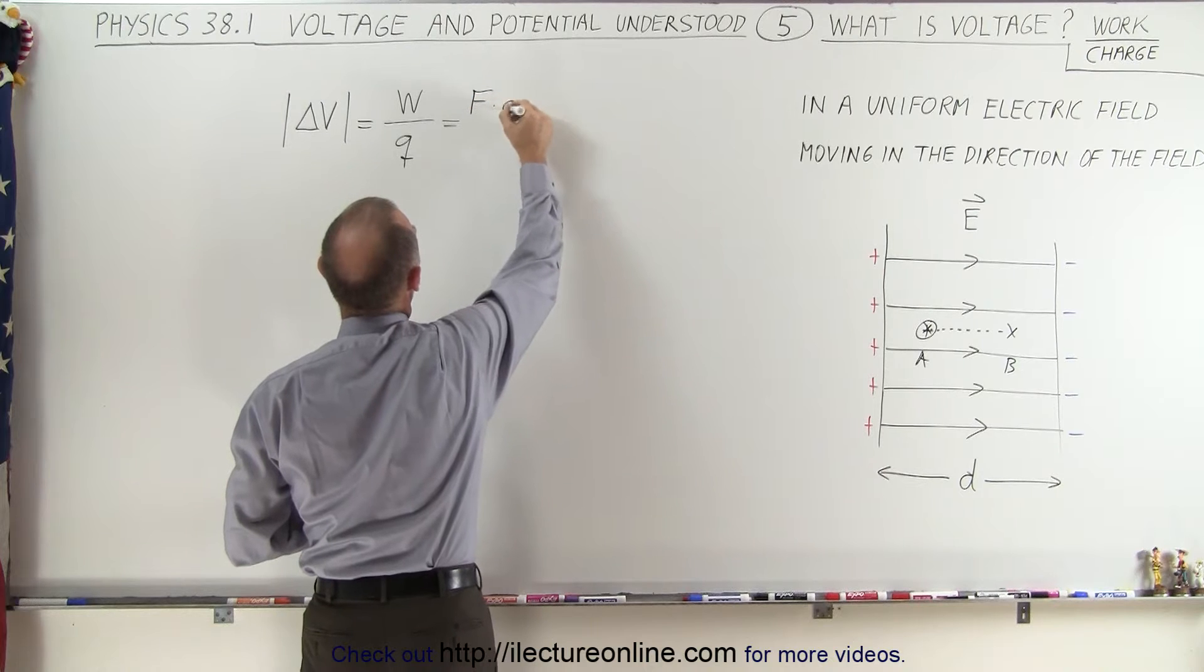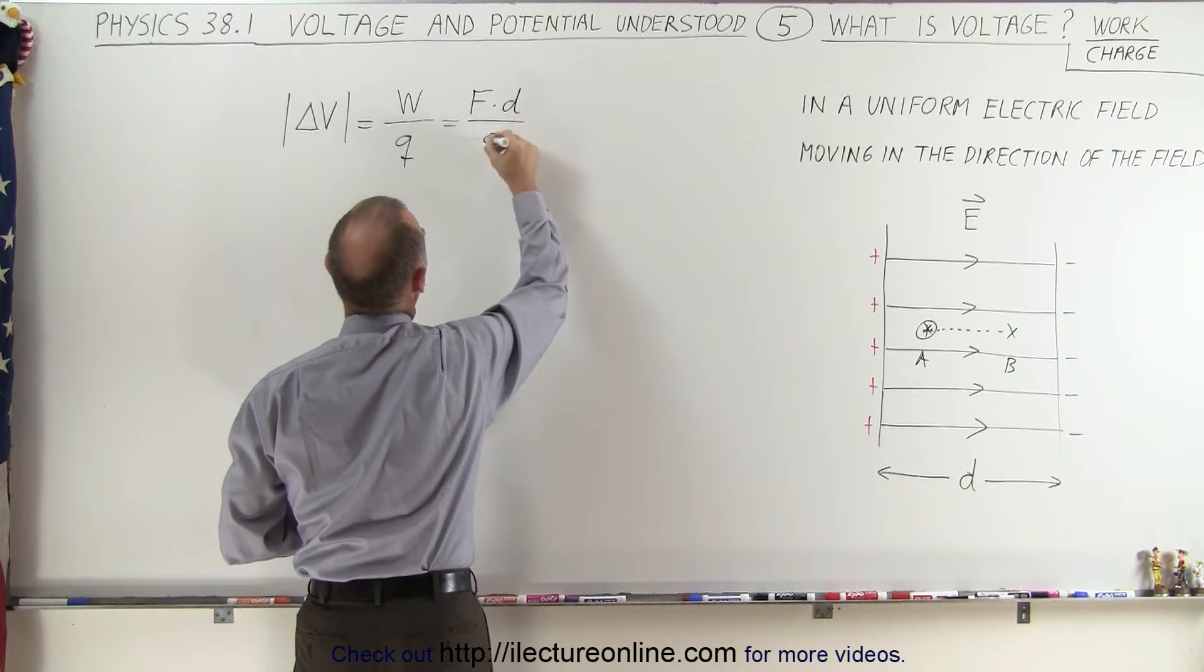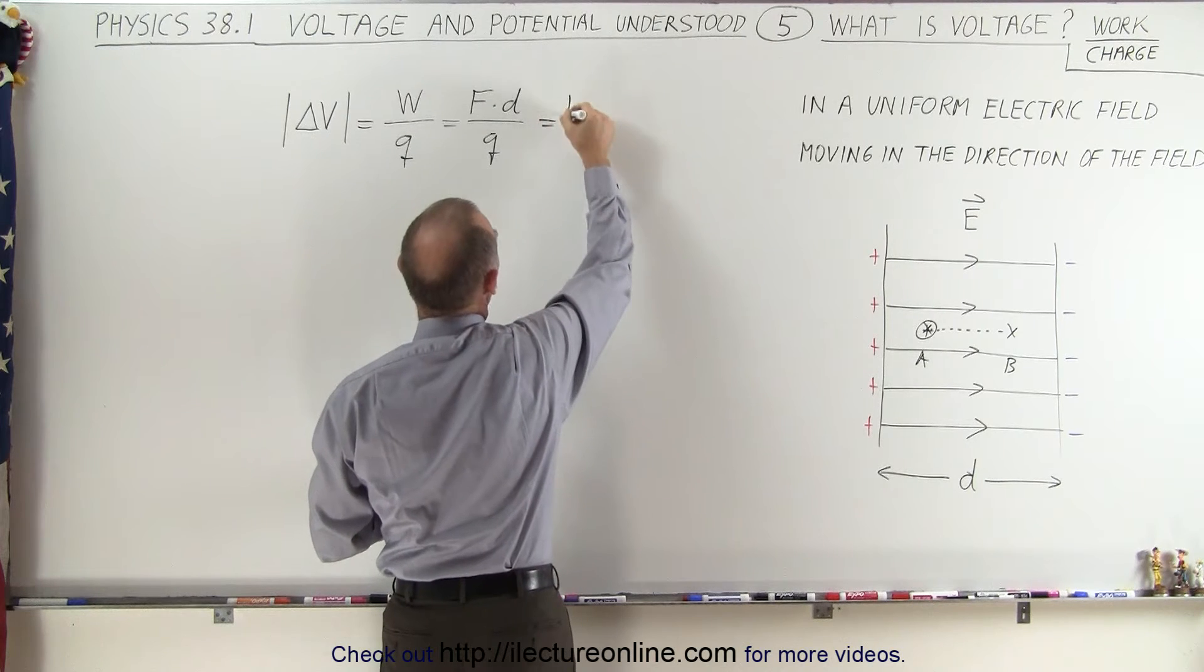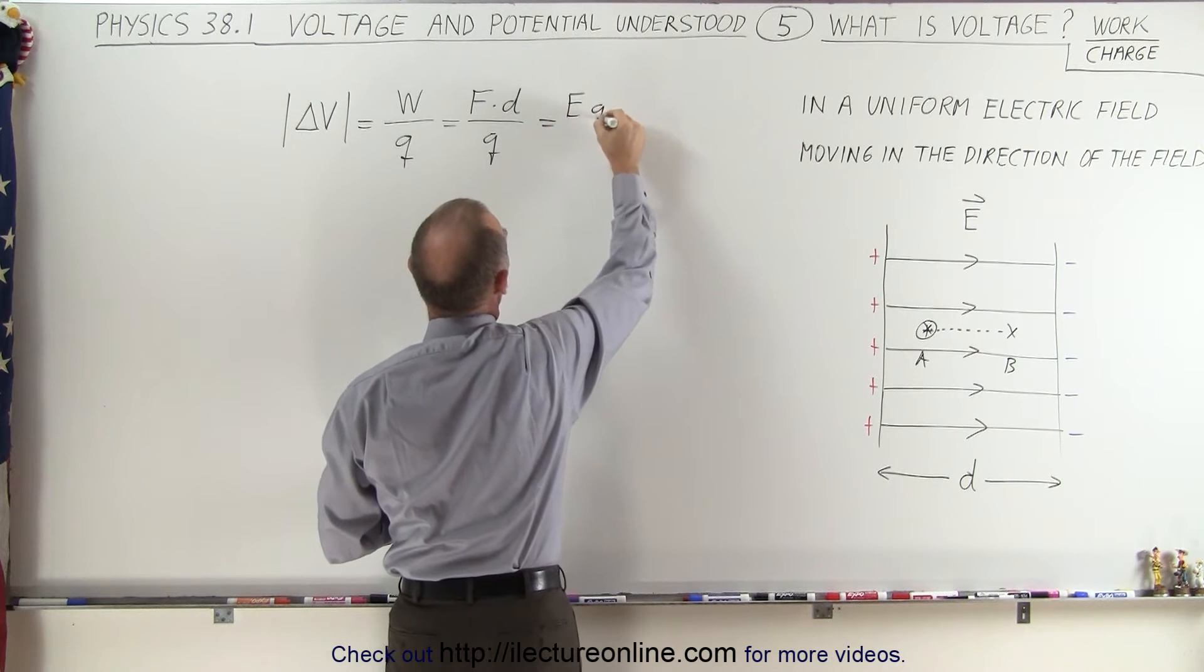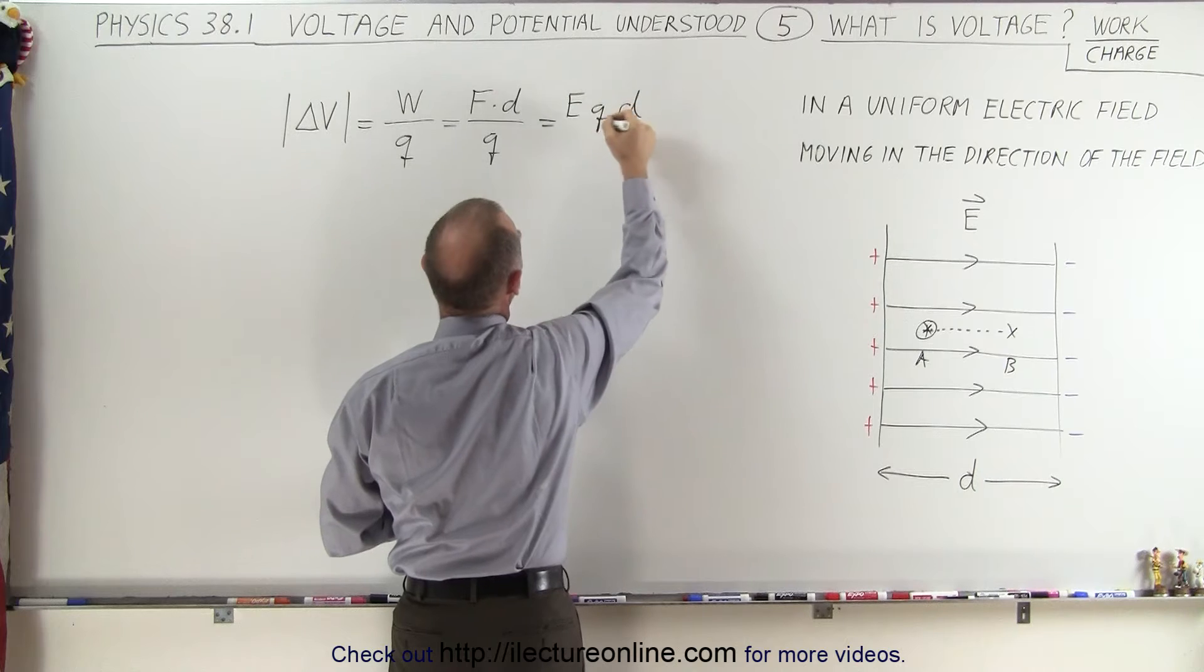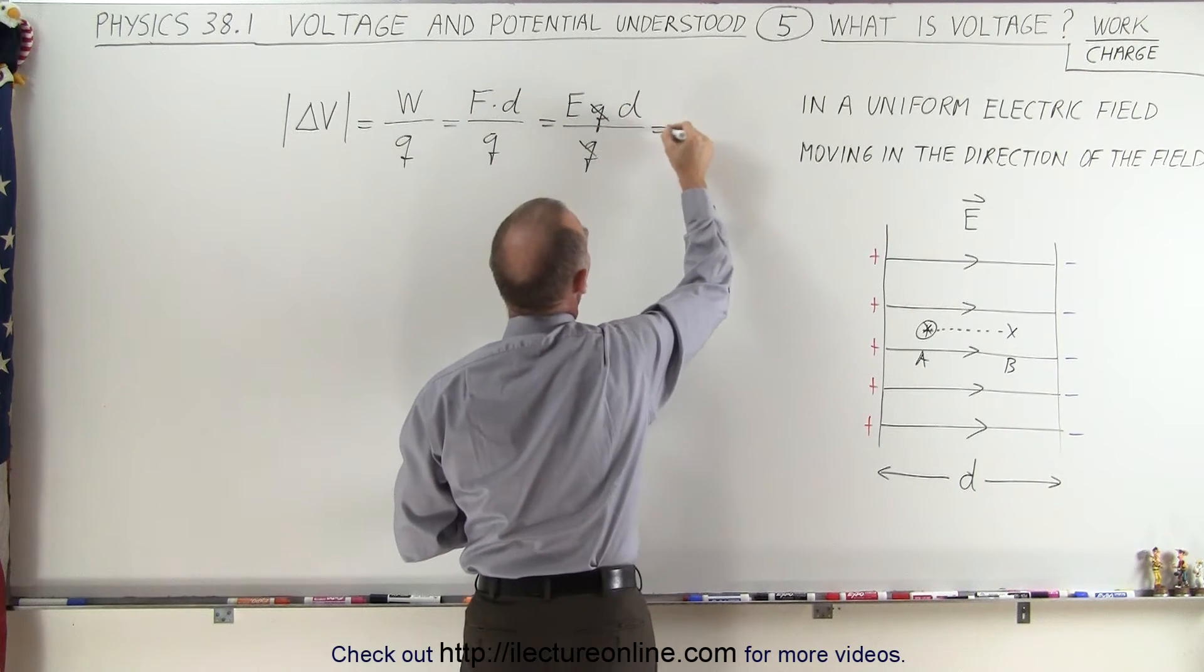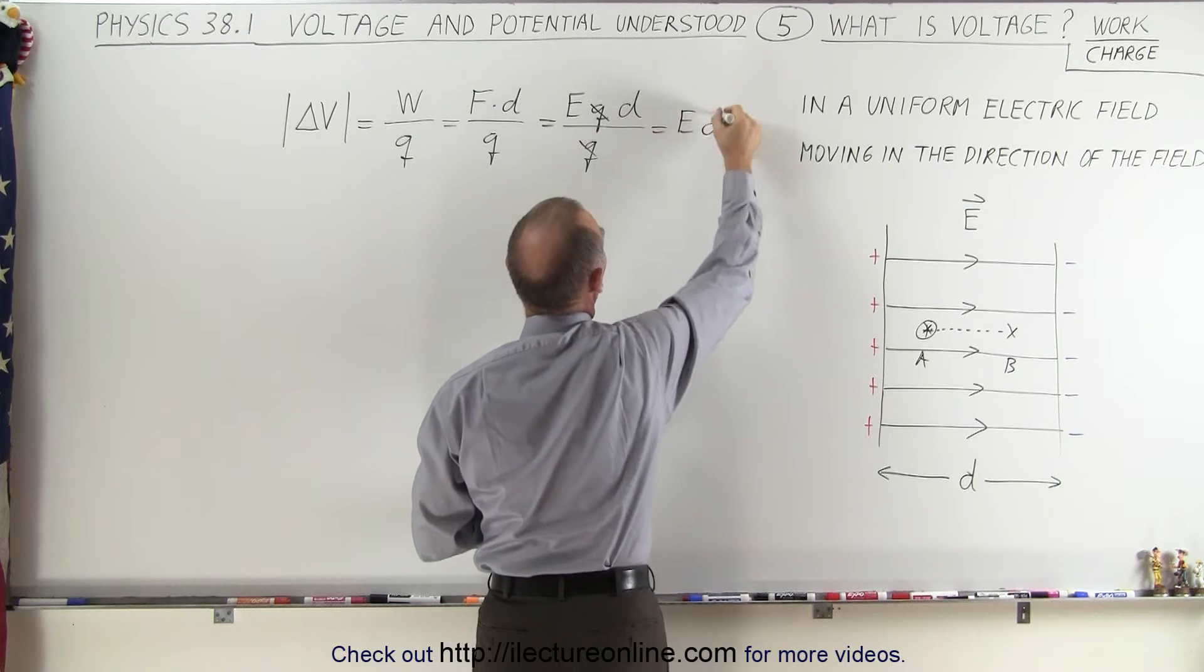so we can write this as force times distance divided by Q. And force in an electric field can be defined as the strength of the field times the charge times distance, all divided by Q. And when the Q's cancel out, we have the strength of the field times the distance.